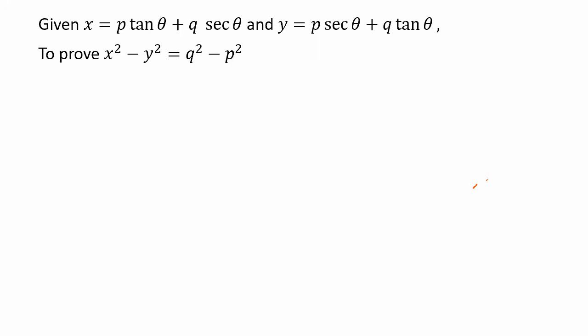What have they given? They have given that x equals p·tanθ plus q·secθ, and y equals p·secθ plus q·tanθ. We are supposed to prove that x² minus y² equals q² minus p².